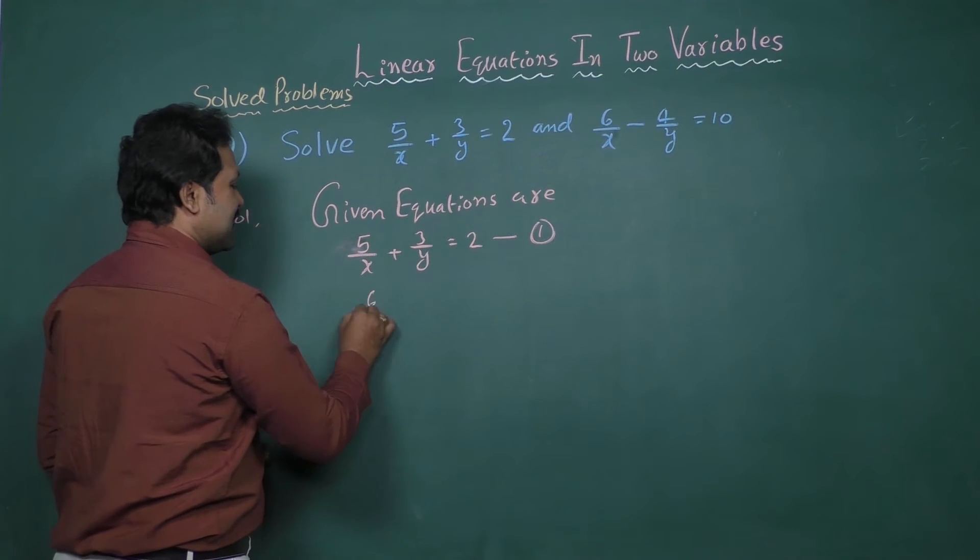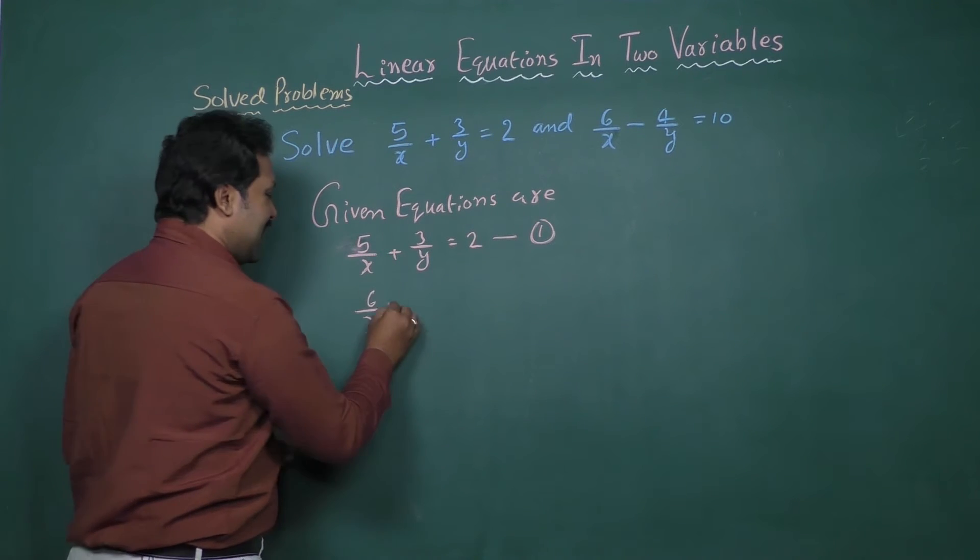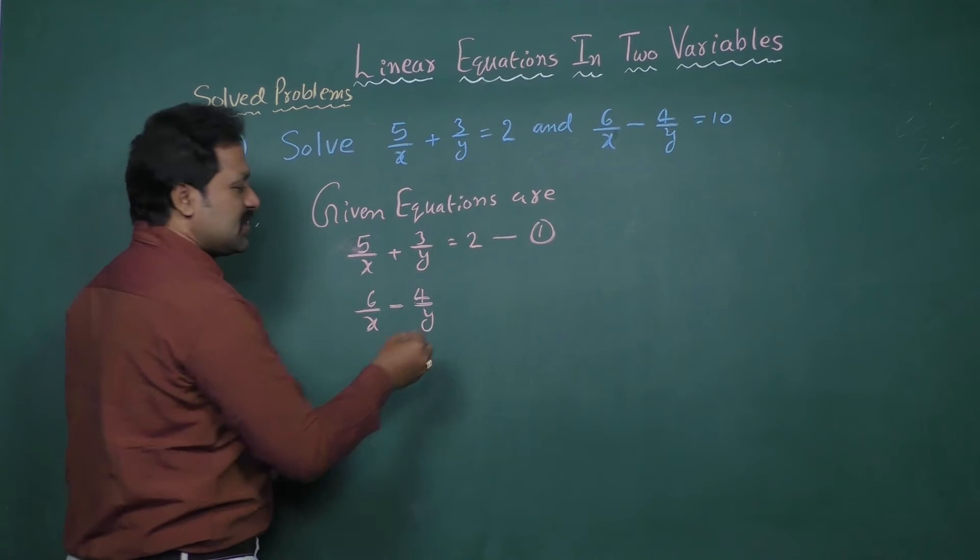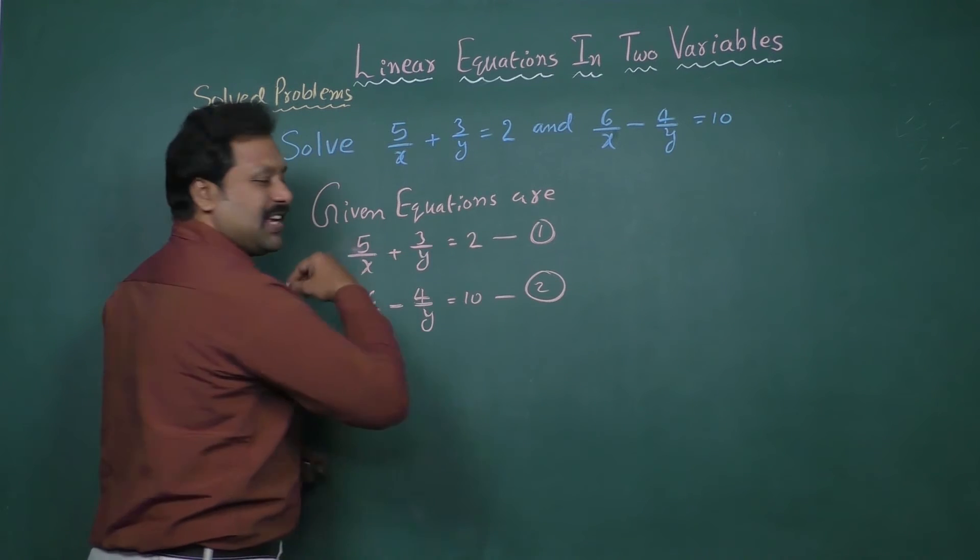6 by x minus 4 by y equal to 10. Let it be equation 2.